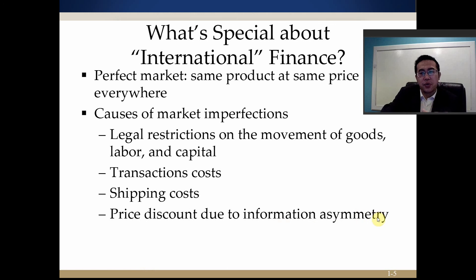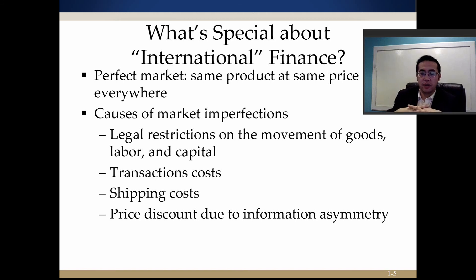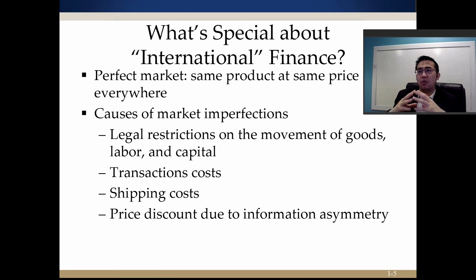Price discounts due to information asymmetry come from basic finance theory. If the buyer and the seller possess different amounts of information, the buyer will ask for a larger discount to compensate for what they don't know. When buyers and sellers are in different countries and face language barriers, that basically exacerbates information asymmetry, causing the buyer to ask for more of a discount.